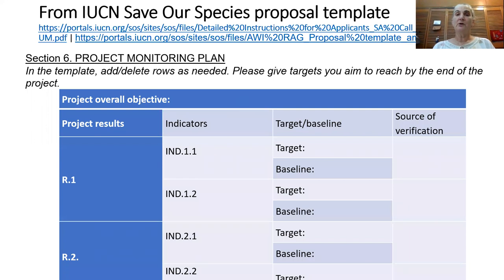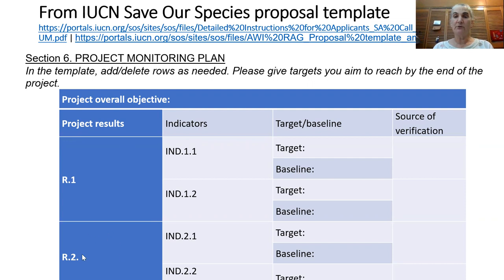Let's take a look at this example template from the IUC and Save Our Species Project Monitoring Plan for their proposals. For your project results, they are basically a restatement of the actionable SMART objectives. For each of these results that you want to achieve, you might have a couple of indicators of progress on that result.